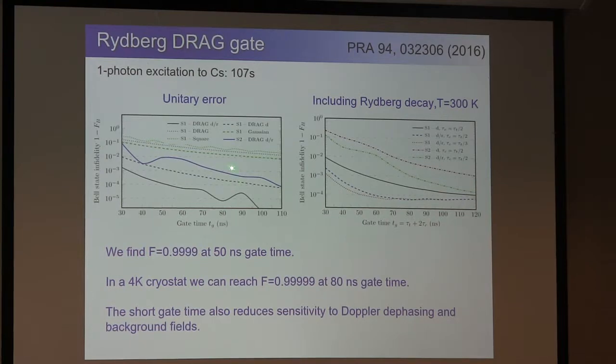So we did that, and then you put that in the master equation simulator, and you see what we get. This is just a unitary error for different pulses. The square pulse is this dotted line, Gaussian is this dashed line, and then these curves that have very low errors are DRAG pulses with some different details in exactly how we set them up, and also the ratio of the Rabi frequency for the control and target qubits. If we include the Rydberg decay at 300 Kelvin, we get these curves here, and we can hit 10 to the minus 4 error at 150 nanosecond gate time. And if you put this in a cryostat, you get five nines. So another feature here is that this is a very short gate, and indeed this is what was originally promised in the Jaksch paper, fast Rydberg gates. They have to be fast, and they can be fast. Having the short gate time means there will be less sensitivity to Doppler dephasing and integrated background field shifts.